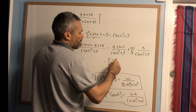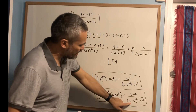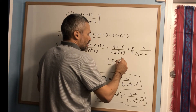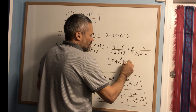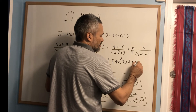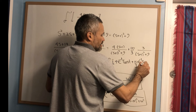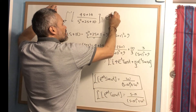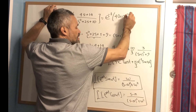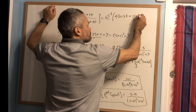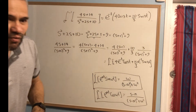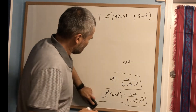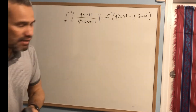Since a = -1 and ω = 3, the inverse Laplace transform is 4e^(-t) cos(3t) plus (10/3) e^(-t) sin(3t). Factoring out e^(-t), the answer is e^(-t) times (4 cos(3t) + (10/3) sin(3t)).